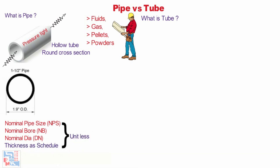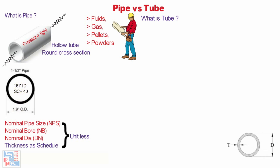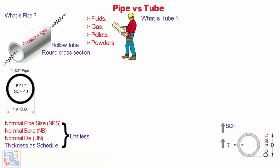Pipes are defined on the basis of unitless nominal pipe size (NPS), nominal bore (NB), nominal diameter (DN), and thickness as schedule. As you can see in this picture, NPS 1.5 inches pipe has an outer diameter fixed at 1.9 inches. The internal diameter changes based on thickness — for schedule 40, it is 1.61 inches. For a given NPS, the outside diameter stays constant and the wall thickness increases with a larger schedule number. The inside diameter depends upon the pipe wall thickness specified by the schedule number.